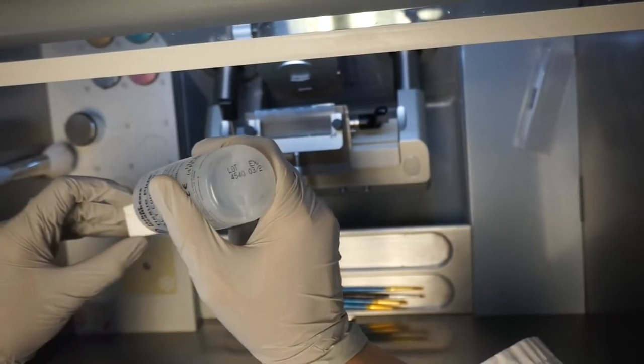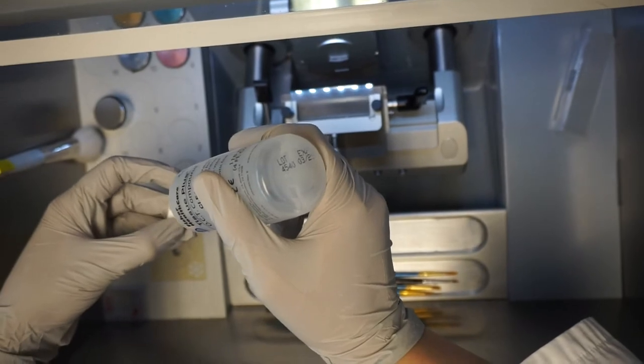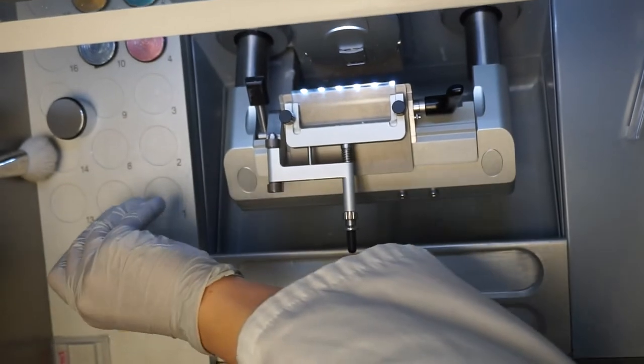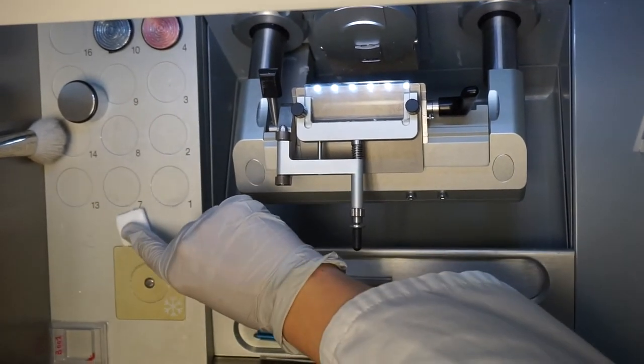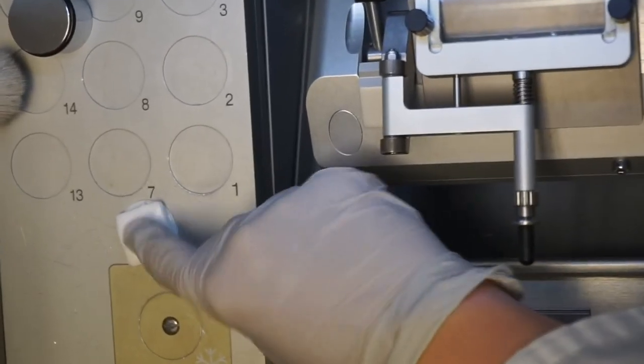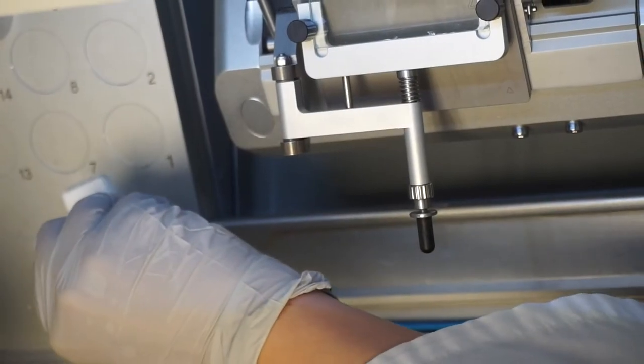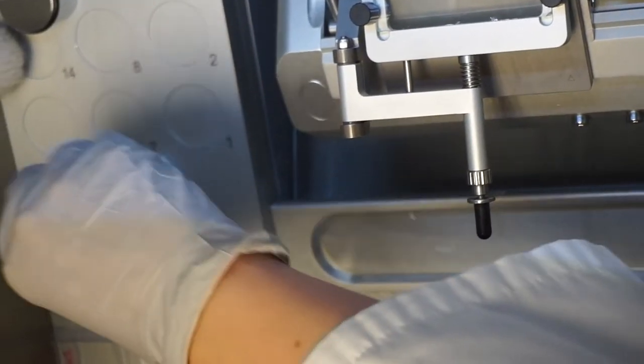Evenly cover the surface of the block that will be in contact with the blade with a thin layer of OCT. Press it down on the cooled storage area to make it flat. Remove it when the OCT has solidified. Trim with a razor blade to have straight edges. Should the orientation of the block matter, be sure to keep track of it at this stage.